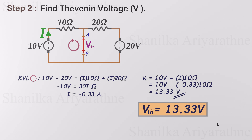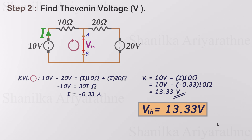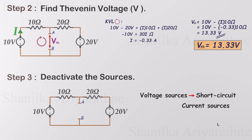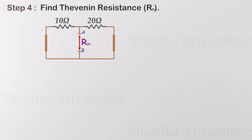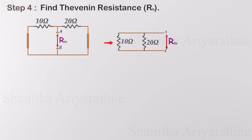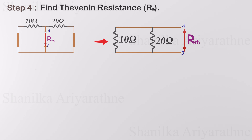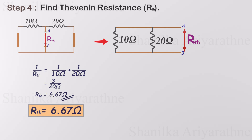Our next goal is to calculate the Thevenin resistance. For that, we have to deactivate all sources — open current sources and short voltage sources. Since we only have voltage sources, let's short circuit those. After deactivating the sources, we calculate the total equivalent resistance across the open load terminals. Both resistors are connected in parallel across points A and B, so we calculate the total resistance, which is 6.67 ohms. This is our Thevenin resistance.